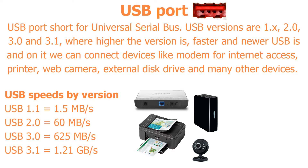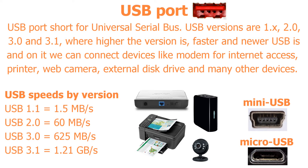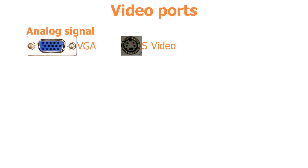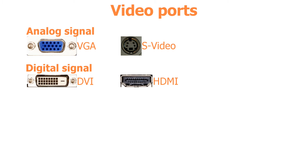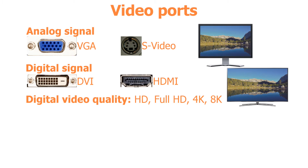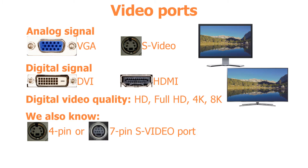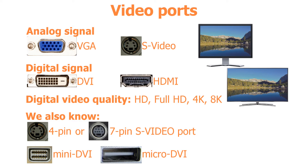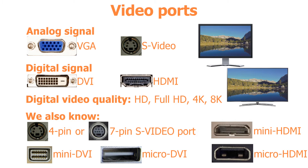Other USB port types include mini USB and micro USB. Video ports like VGA and S-Video carry an analog signal, while DVI and HDMI carry a digital signal to display output on an external display like a monitor or television. Digital signal can carry much better video quality — HD, Full HD, 4K, and 8K — than an analog signal. We also know 4-pin and 7-pin S-Video, mini DVI, micro DVI, mini HDMI, and micro HDMI ports.